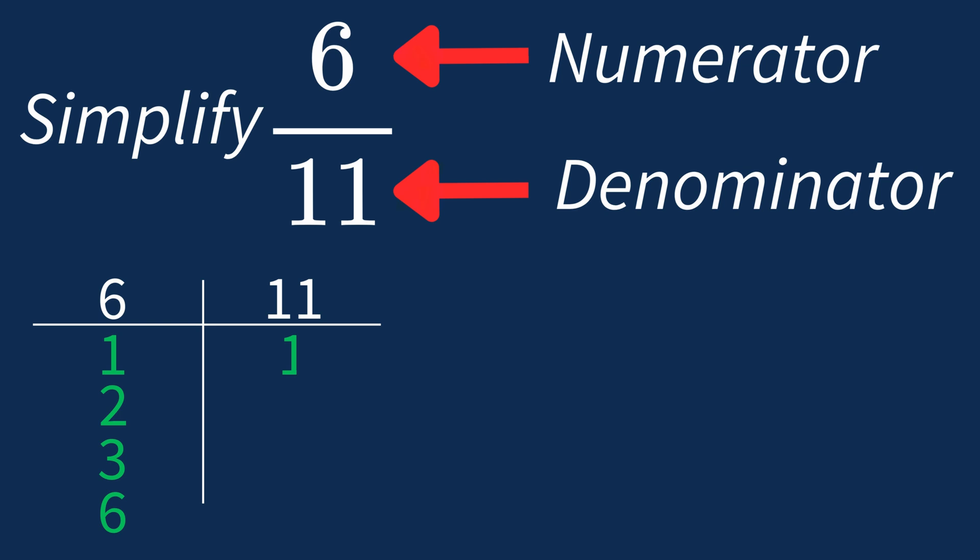For 11, the factors are 1 and 11. So in this case, the largest common factor is 1. This means we'll divide both the numerator and denominator by 1 to see if anything changes.